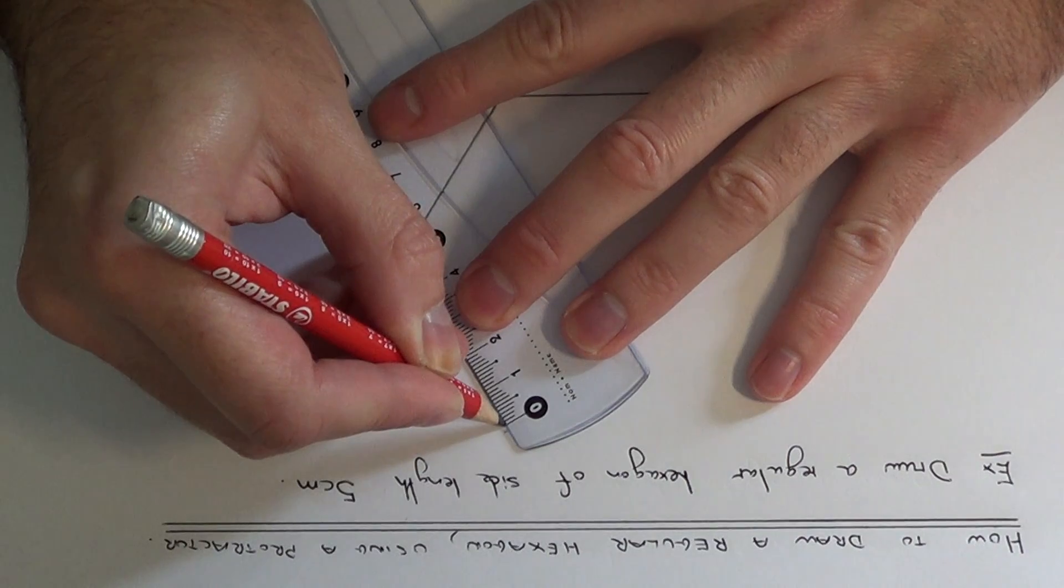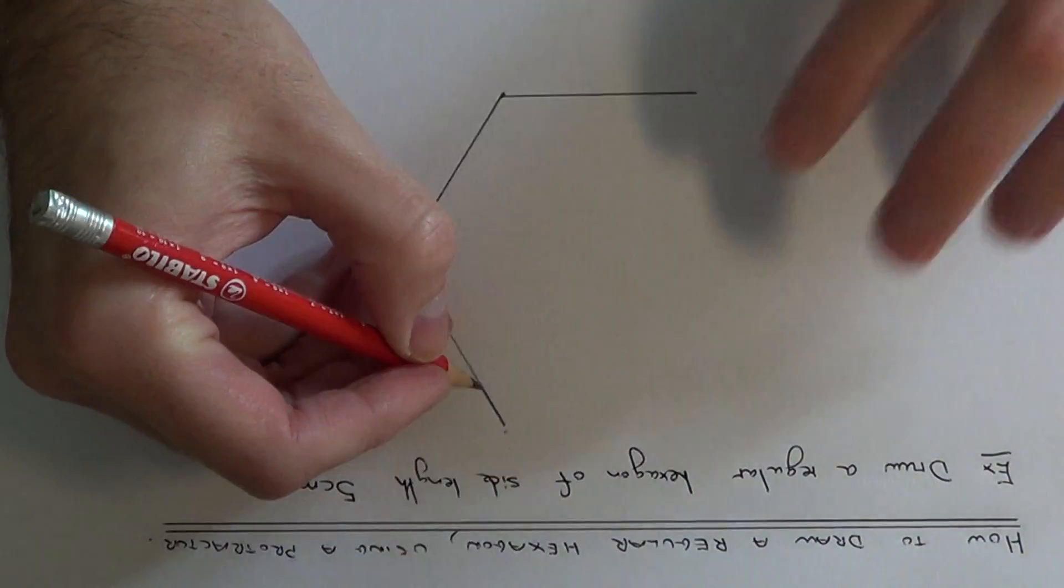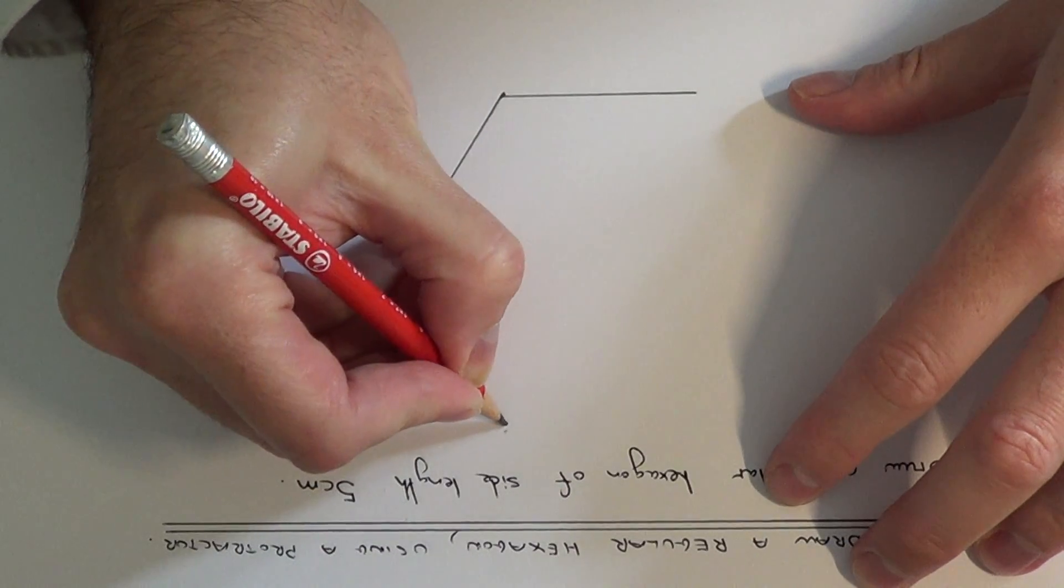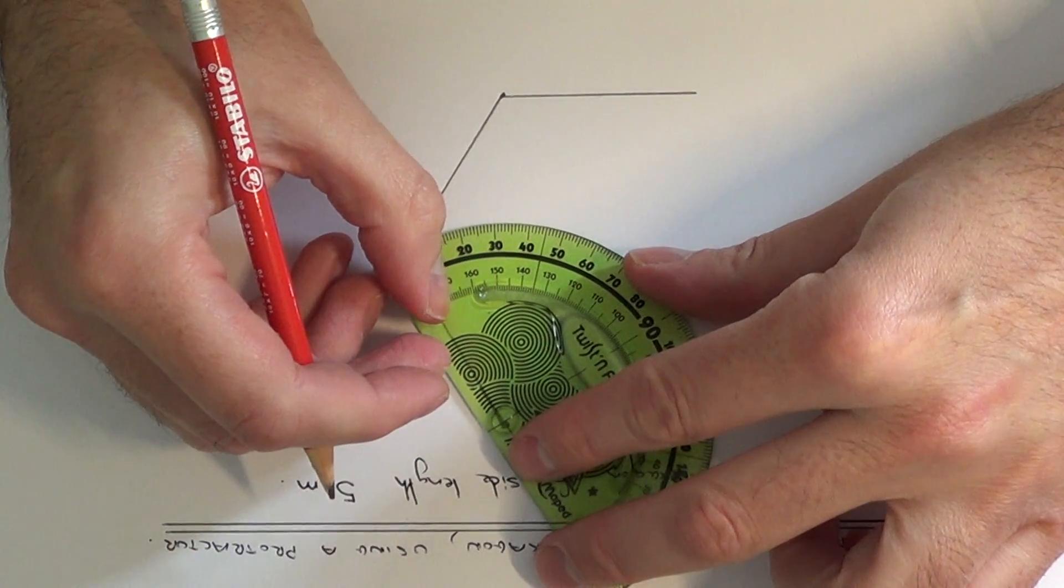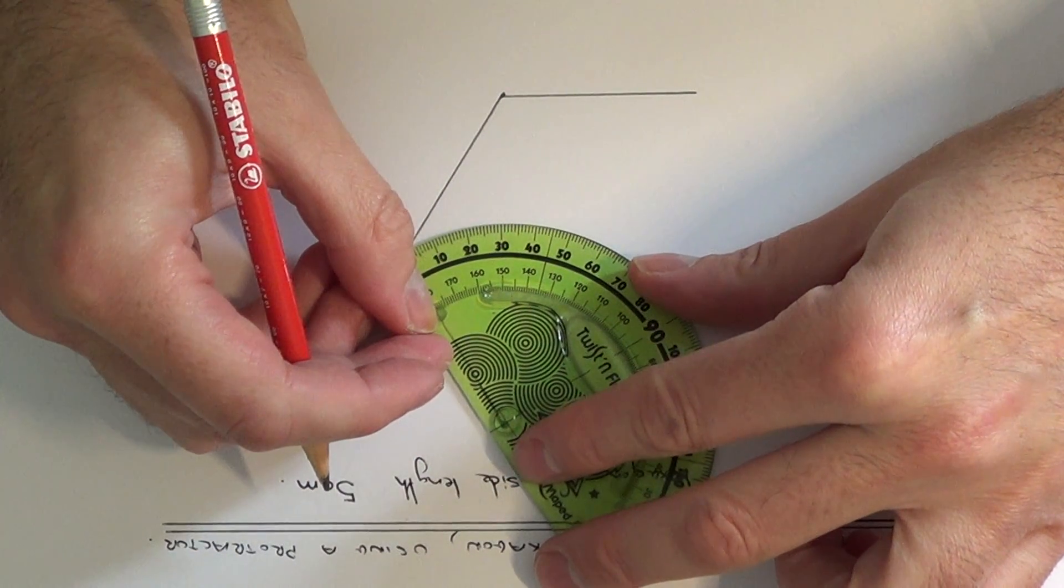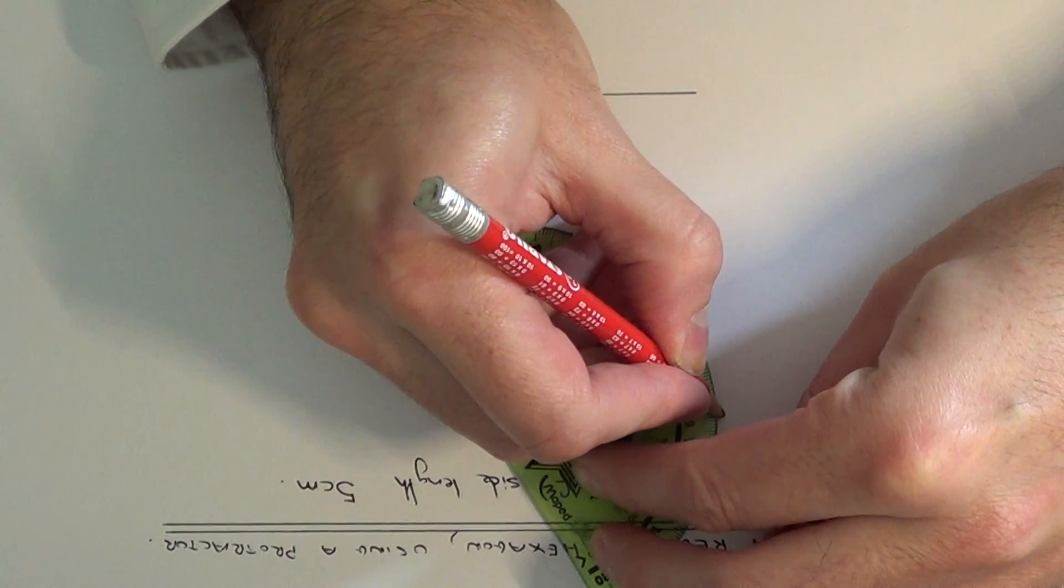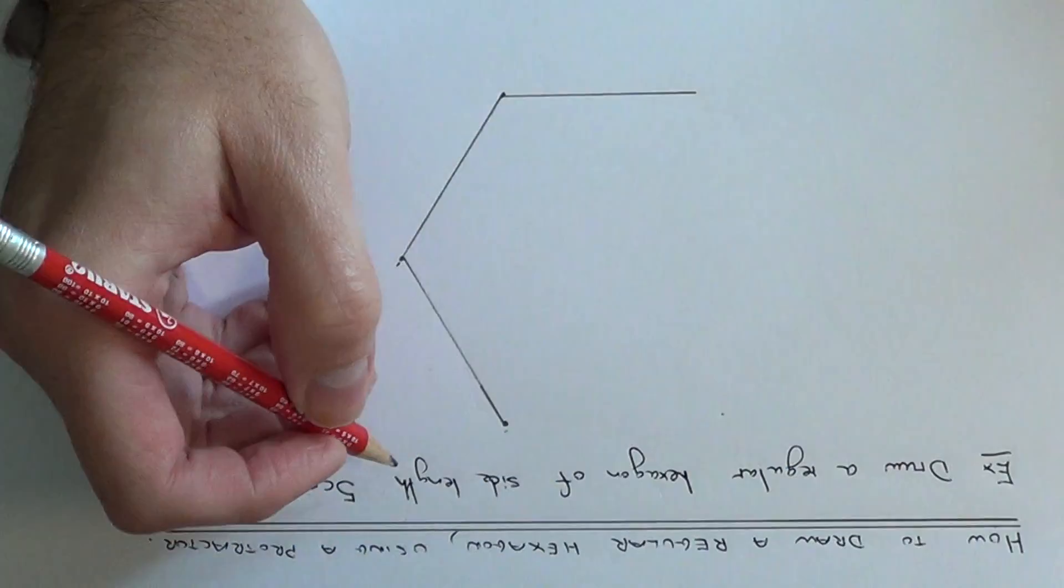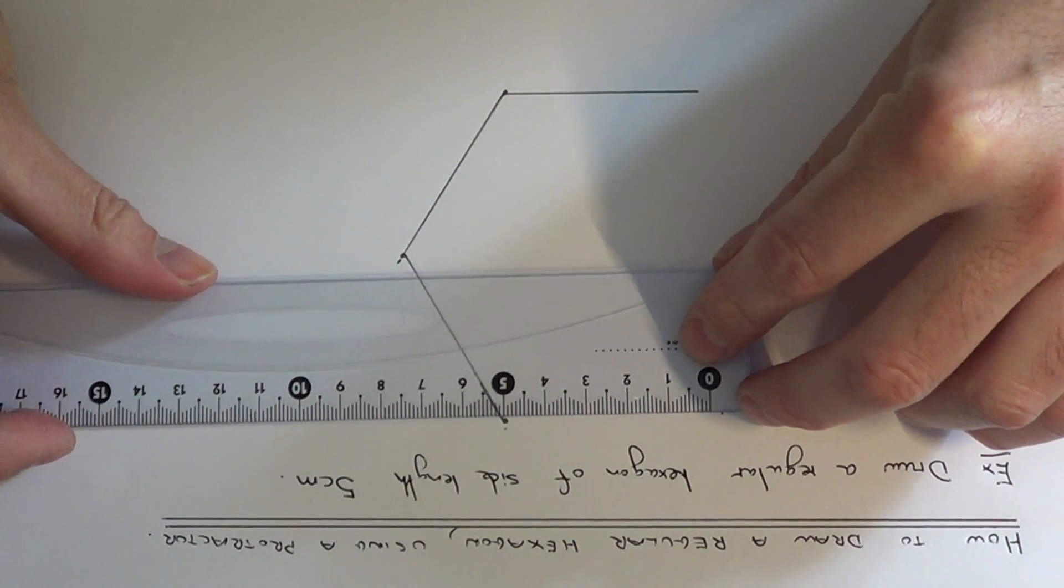Let's put a little dot there. Again, if we do the same, put the marker point at the end of the line and mark an angle of 120 degrees. Again, make the line 5cm long.